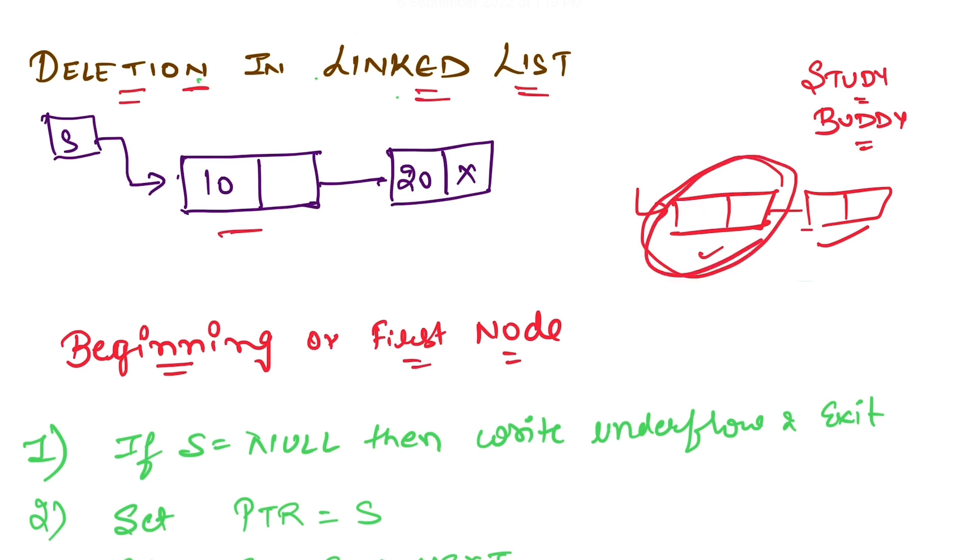First we will check the underflow condition. If s is equal to null, then it is underflow and we will exit. Next we will set a pointer variable ptr that will be equal to s.